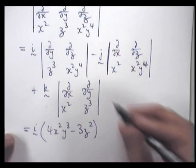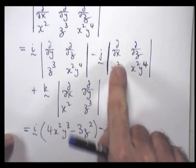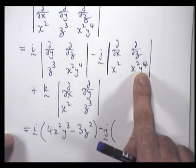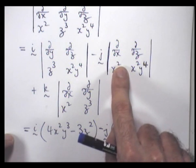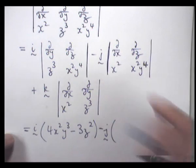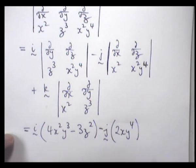All right, move on to the second one. Again, go diagonally. It's d/dx of x squared y to the 4th minus d/dz of x squared. So that term is going to be 0. This term is going to be something like 2x y to the 4th.